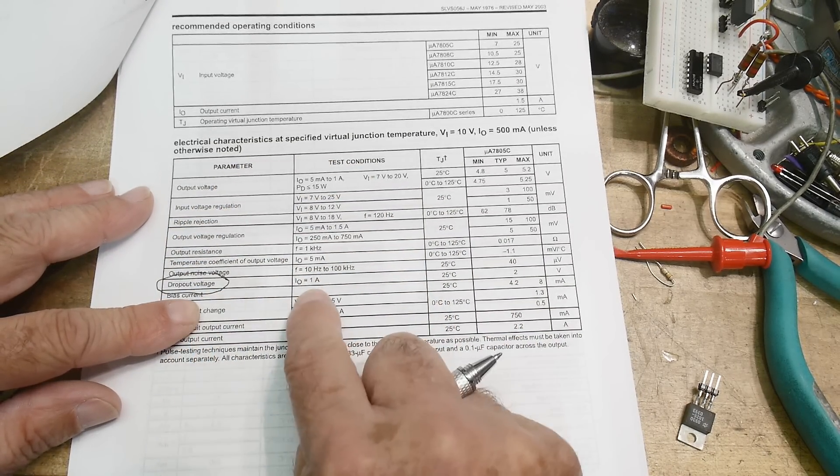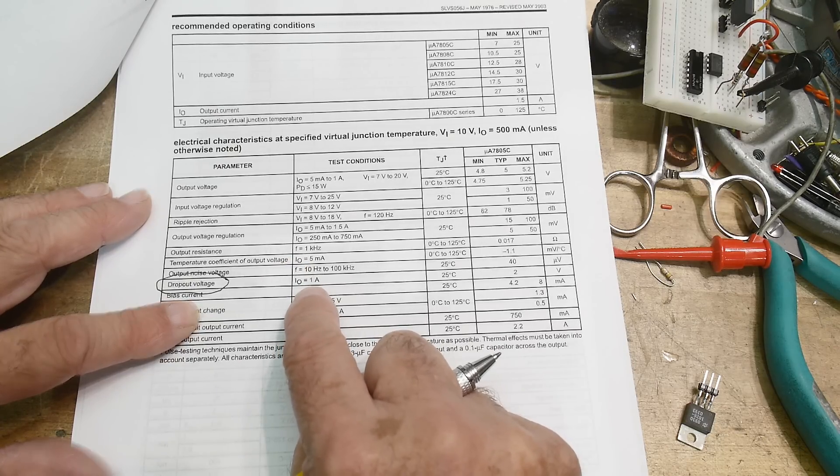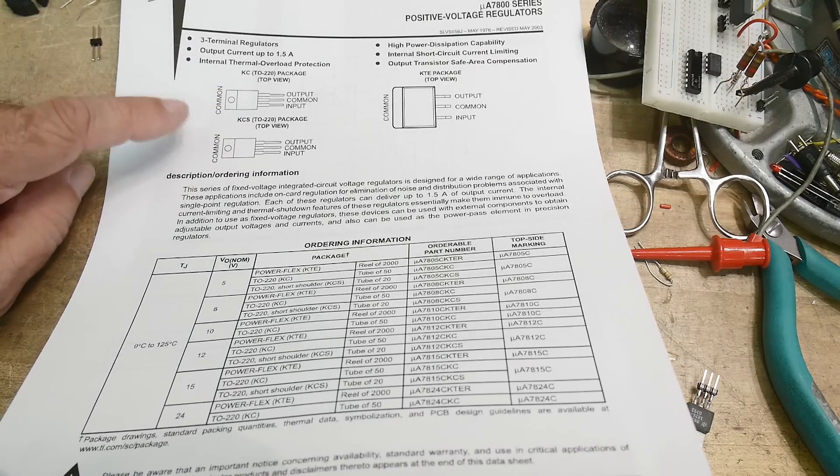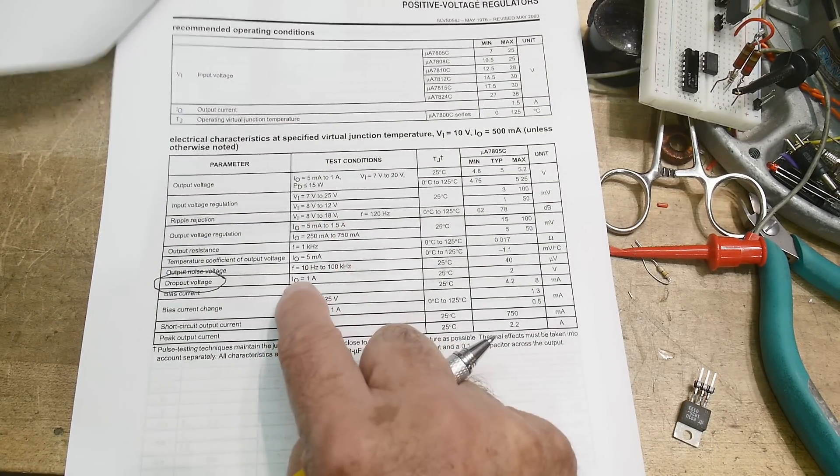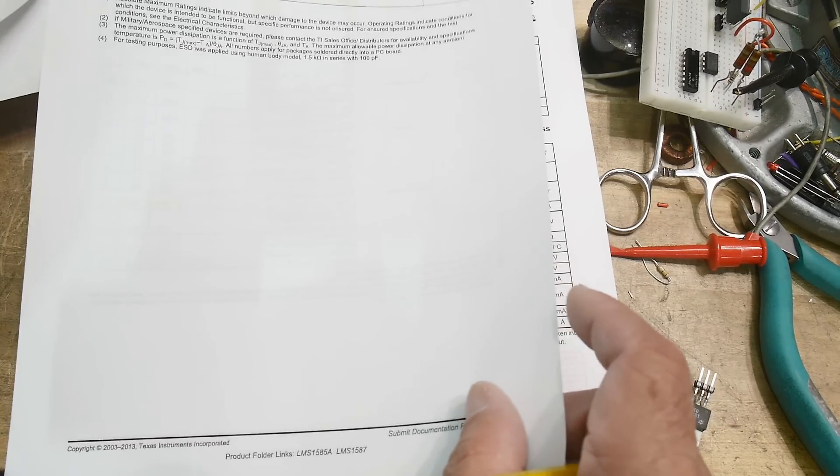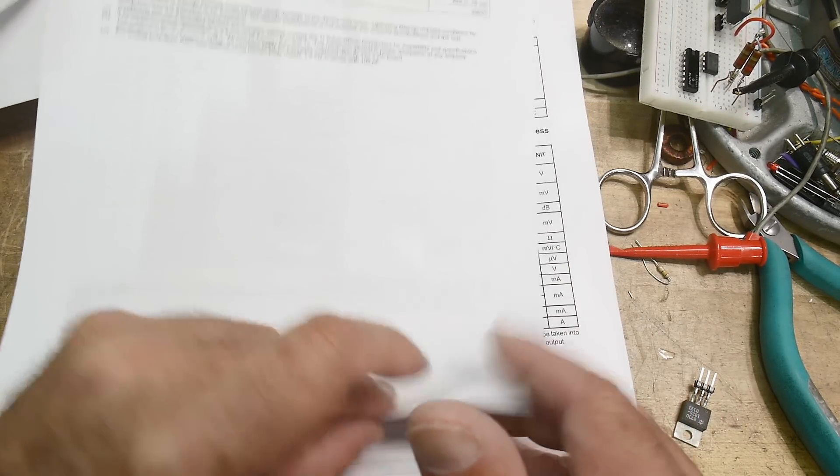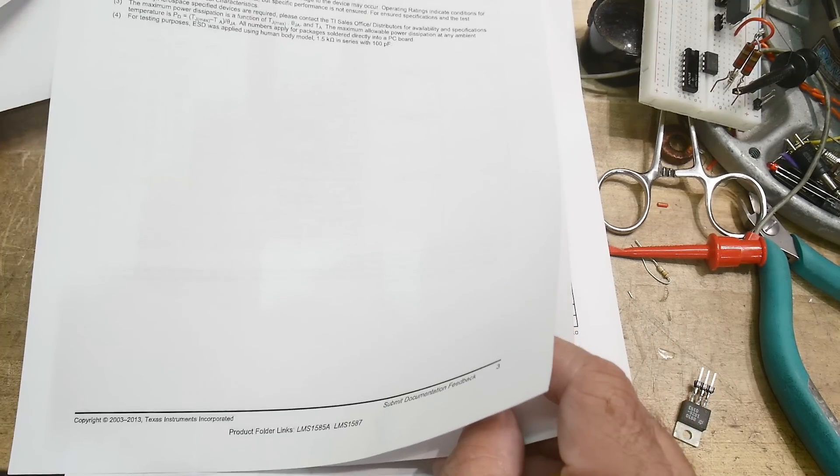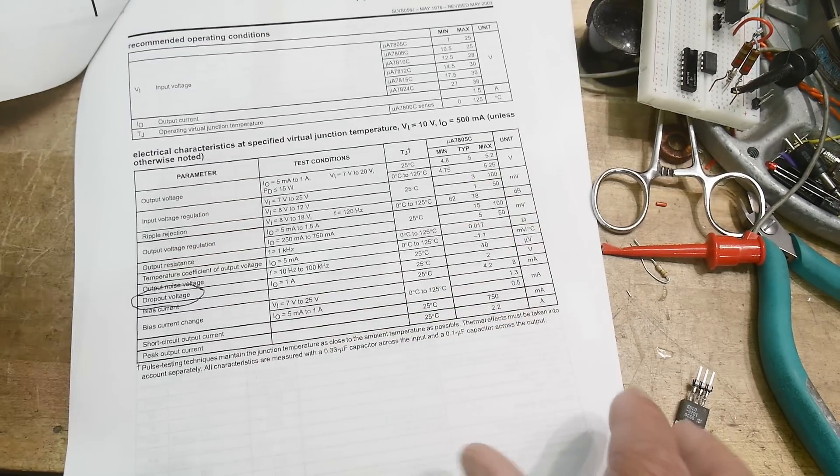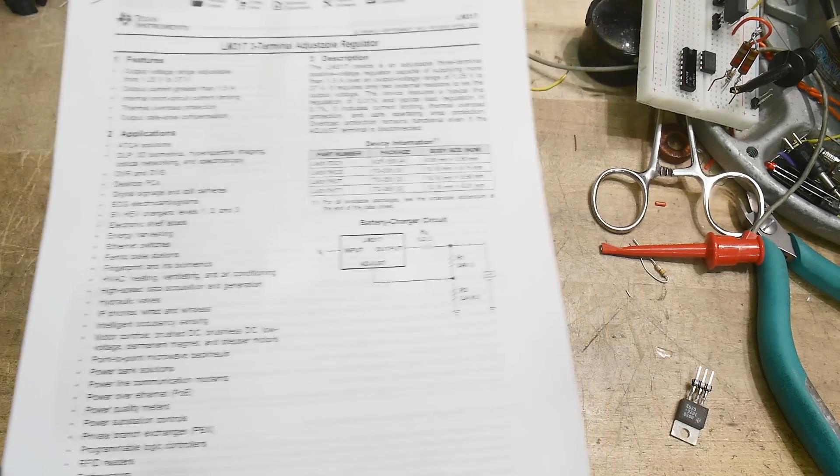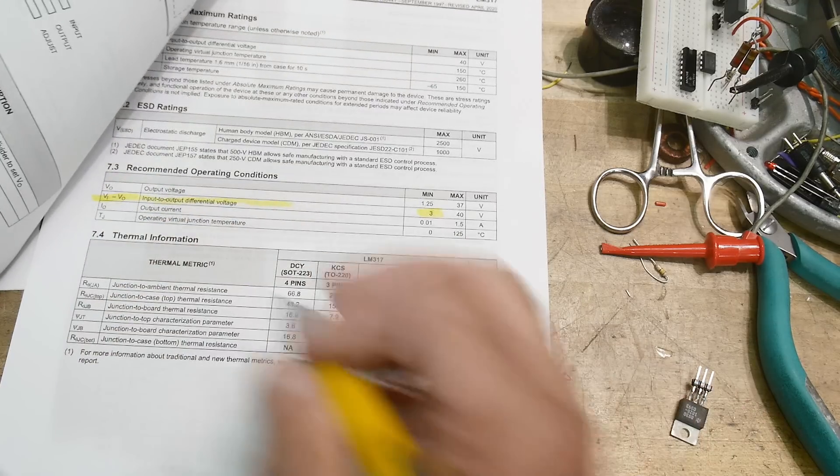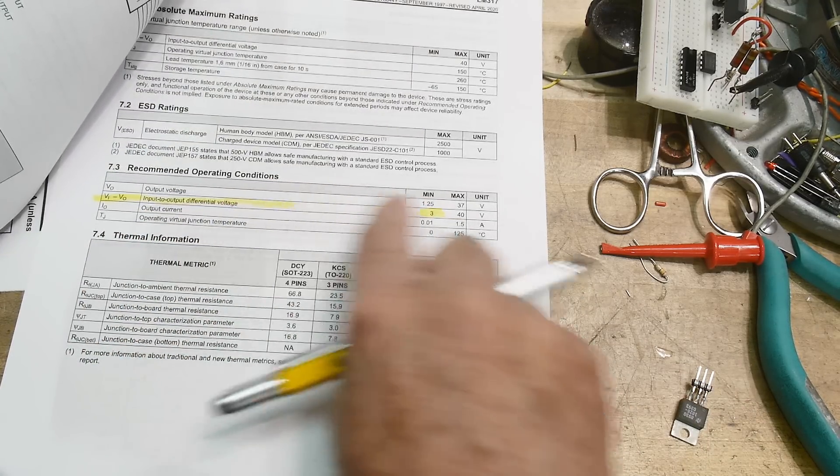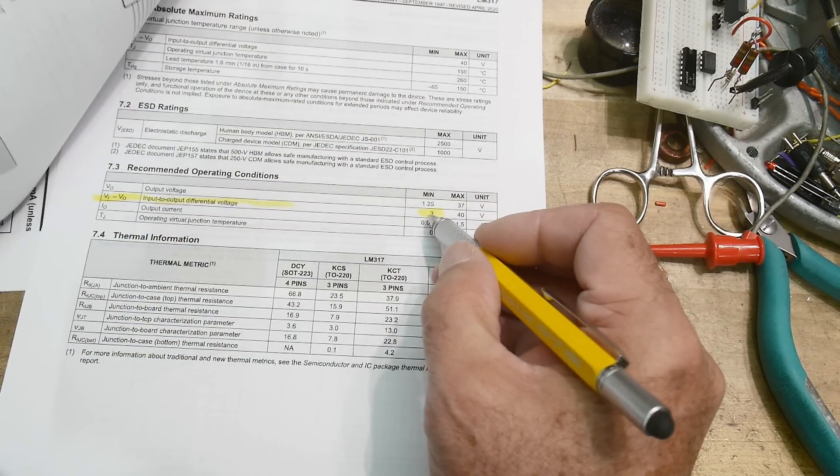So the dropout voltage at one amp, so they're testing it at one amp. Now this goes up to an amp and a half, so they're limiting their test conditions. Let's see if this one limited its test conditions.